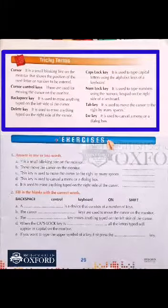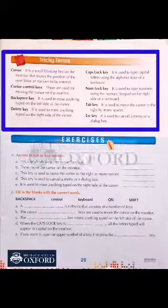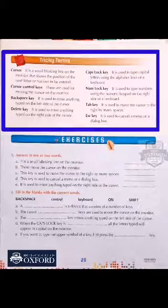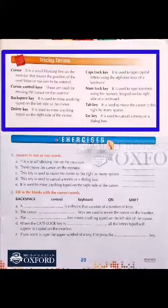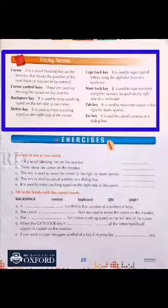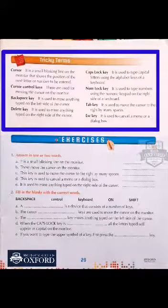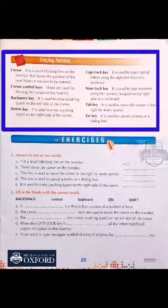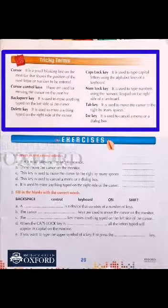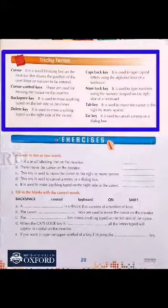Cursor control keys — in ko hum arrow keys bhi kehte hain. Inka kya kaam hota hain? These are used for moving the cursor on the monitor: up, down, right, left. Ye keys hoti hain aur inka kaam hota hain cursor ko monitor ke uper move karne ke liye. Agar humare paas mouse nahi hain, without mouse we just want to move the cursor from keyboard, so we will press these keys and move them.